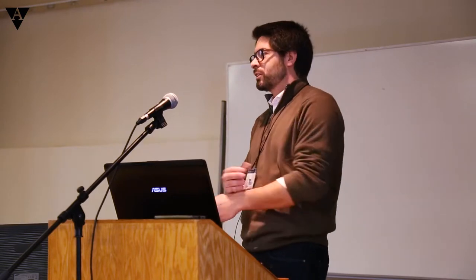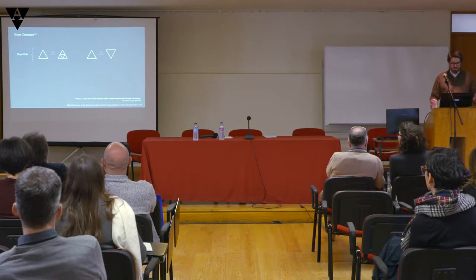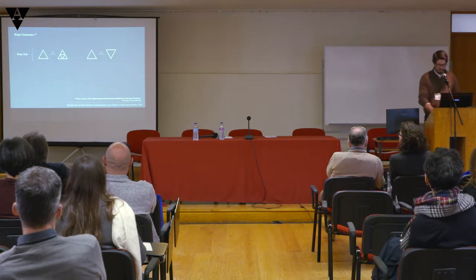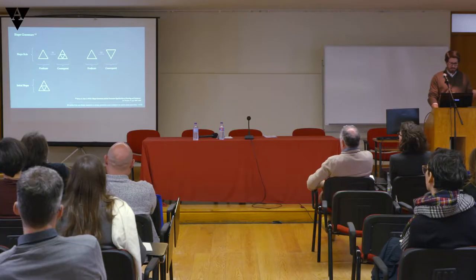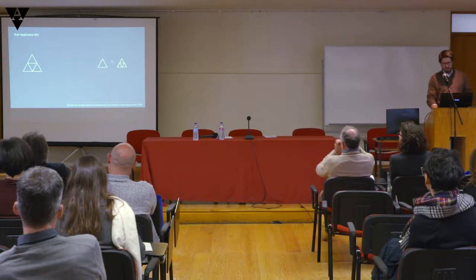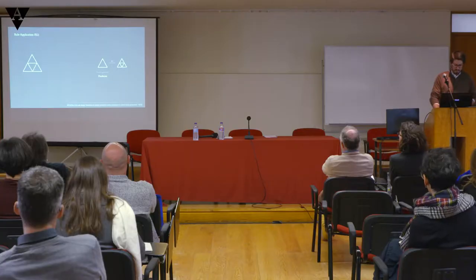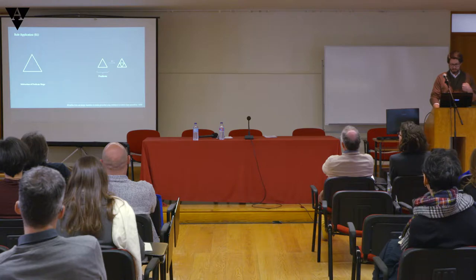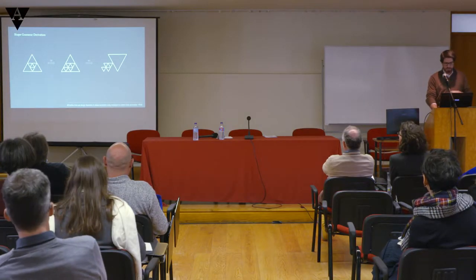Rudi already gave us a very good introduction yesterday on shape grammars. We basically have shape rules — each rule has a predicate and a consequent shape. Starting with an initial shape, we find the predicate in the shape rule, apply an equational transformation on the initial shape, subtract it, and replace it with the consequent shape. We can apply this iteratively over time using different rules, achieving different designs that can increase in complexity with very simple rules.